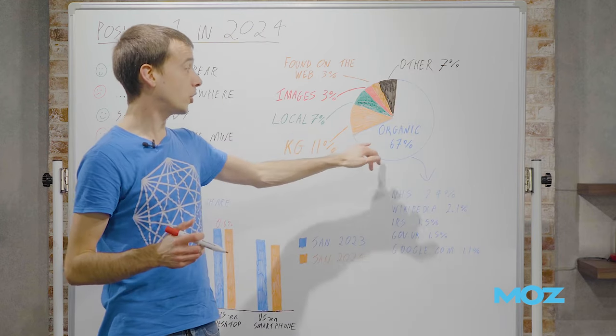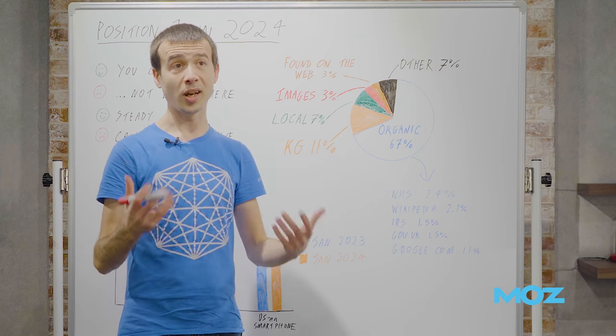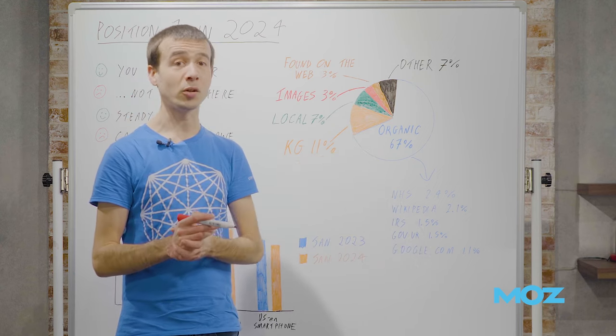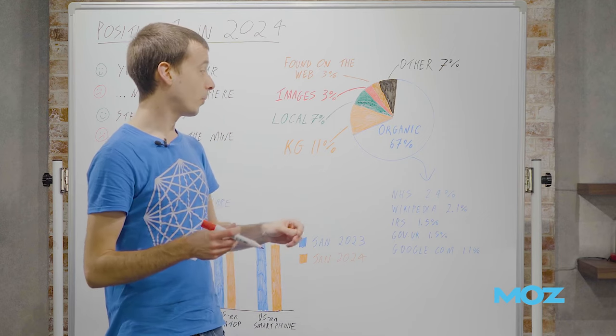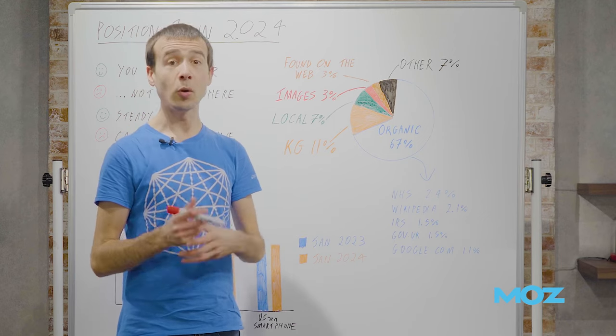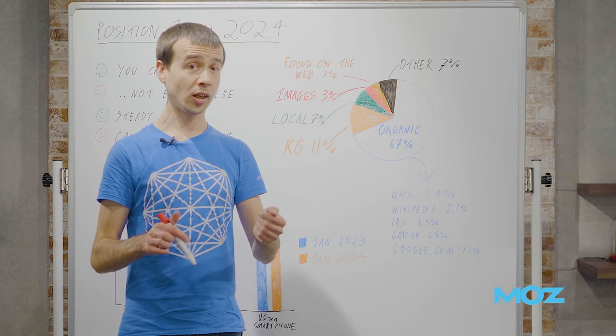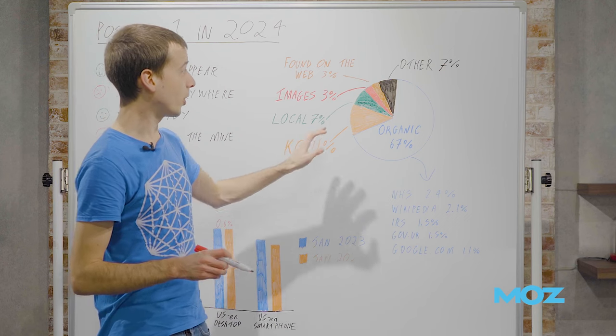What's actually in position one, excluding ads? Well, most of the time, about two-thirds of the time, it is actually regular organic, your ten blue links. This surprised me. I don't know whether it's the naysaying, but yeah, most of the time you are actually looking at organic in position one.